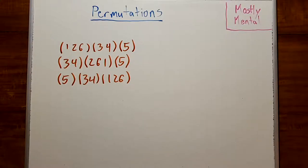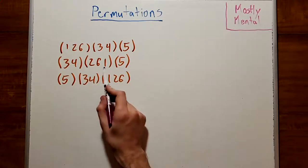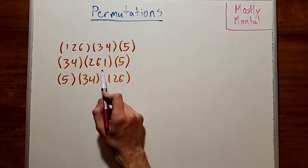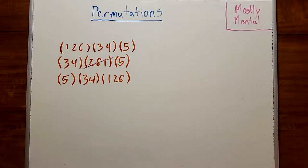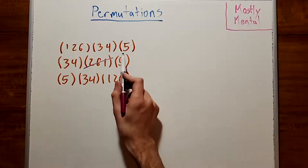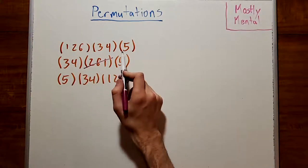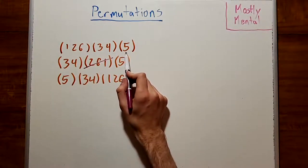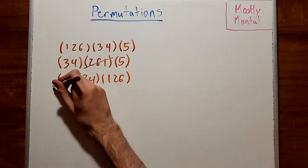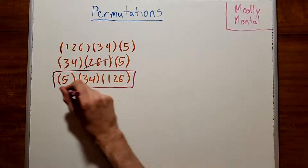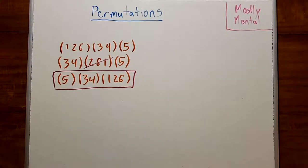To do so, we'll say that you always put the smallest number in each cycle first. So something like this, where the 1 comes at the end, is out. We'll also say that we'll order our cycles such that the one with the largest first element comes first. So that will make this our canonical representation.